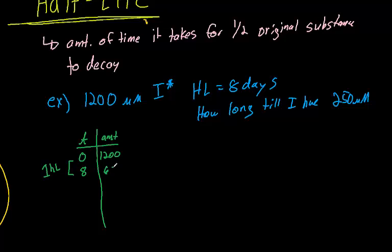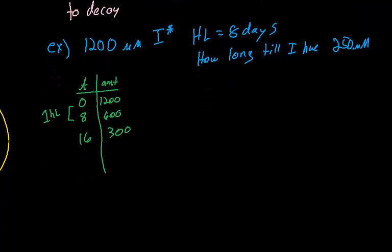At 16 days, we're going to have 300, so we're just adding half-lives. At 24 days, so that's another half-life because each half-life is eight days, we're going to have half of 300, so 150.